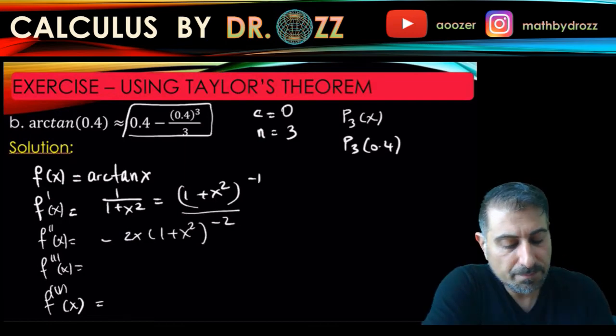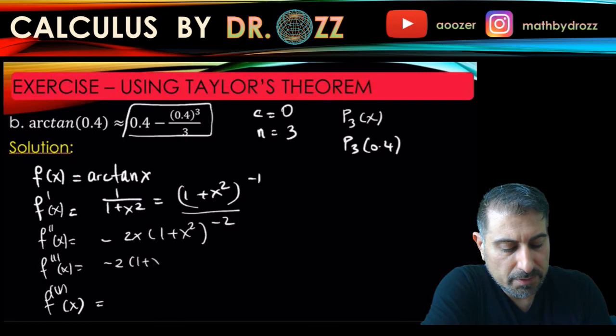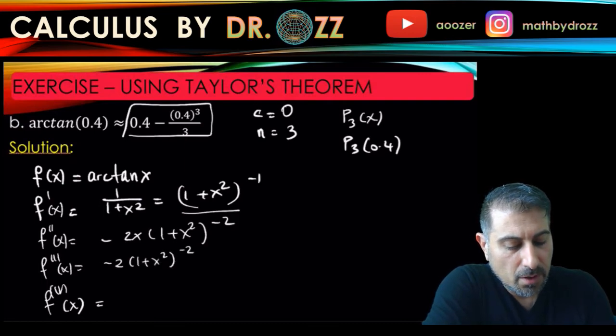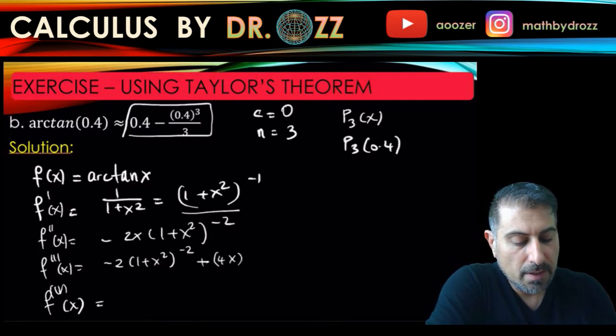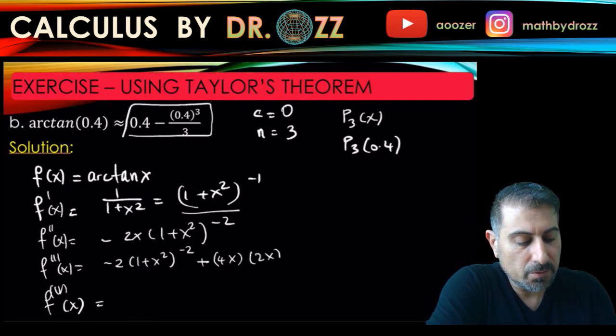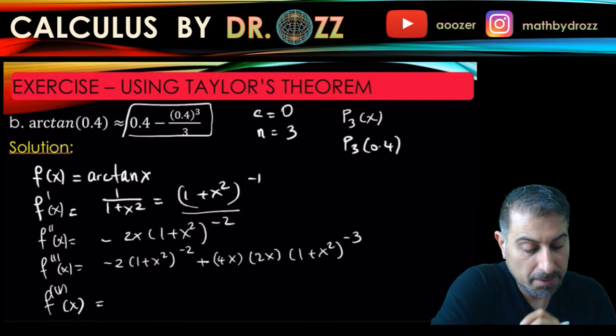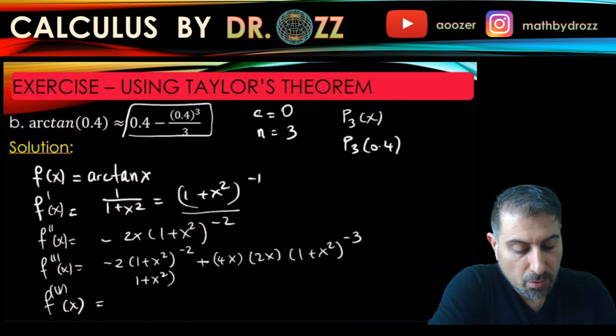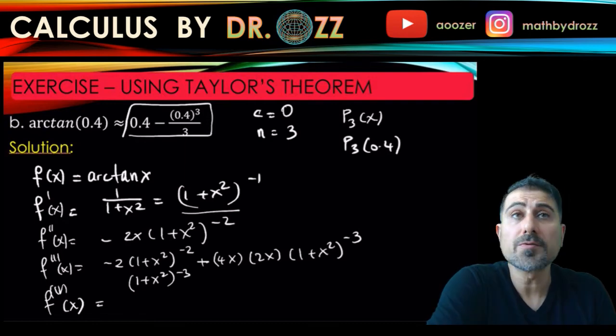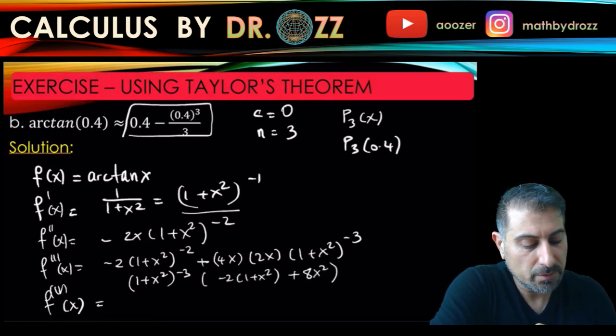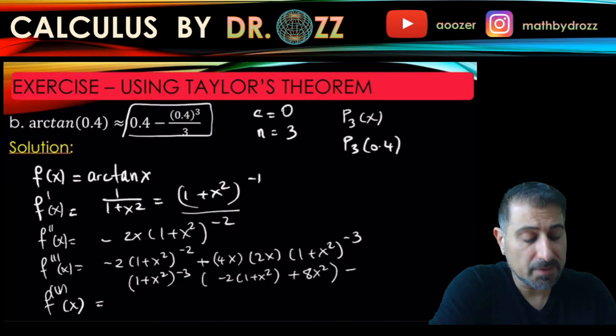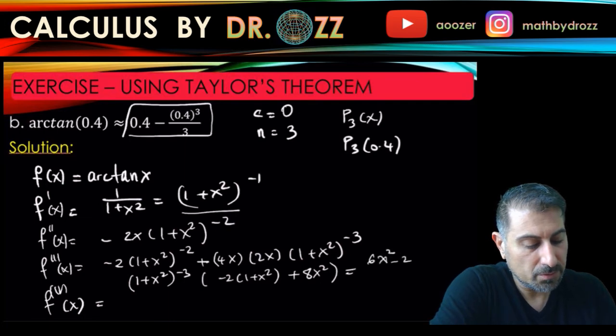Now let's use the product rule. Minus 2 times 1 plus x squared to the negative 2, then minus 2x plus 4x, and then I have the derivative of the inner part, which is 2x, and then I subtract one from the power. Pulling out 1 plus x squared to the negative 3, so you have minus 2 times 1 plus x squared plus 8x squared. That makes it 6x squared minus 2 divided by 1 plus x squared to the power of negative 3.